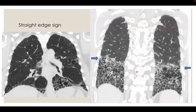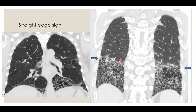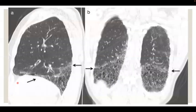Sign number four is the straight edge sign: honeycombing is confined to the lower lobes only, with no extension along the costal or pleural surfaces to the upper lobes, and there is sharp demarcation between the honeycombing and the adjacent normal lung. As seen in these two examples, honeycombing is confined to the lower lobes with sharp demarcation between the honeycombing and the adjacent lung. Another example shows the sharp demarcation and how it is confined to the lower lobes only.